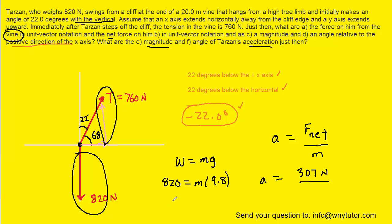If we divide both sides of that by 9.8, we get approximately 83.7 kilograms for Tarzan's mass. So we can fill that in here, and then we'll compute the acceleration. And we get approximately 3.67 meters per second squared. So this would be the correct answer to part E of the question.